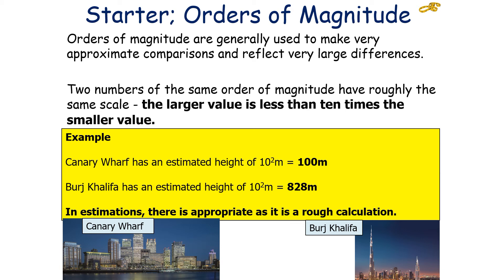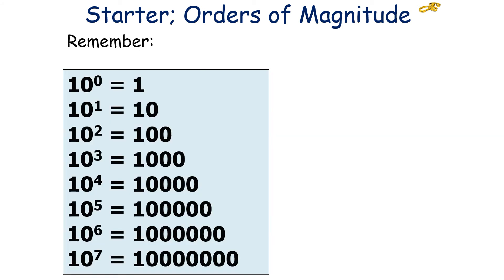Two numbers of the same order of magnitude have roughly the same scale, and a larger value is less than 10 times smaller than a smaller value. For example, Canary Wharf has an estimated height of 10 to the 2 meters, so it's 100 meters, but the Burj Khalifa has an estimated height of 10 to the 2, 828 meters, indicating these estimations really are a rough calculation.